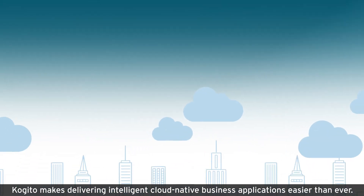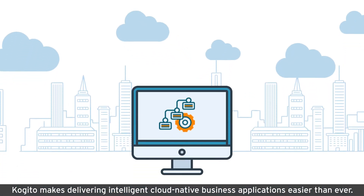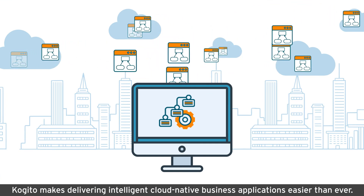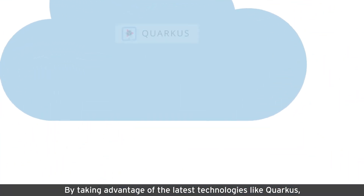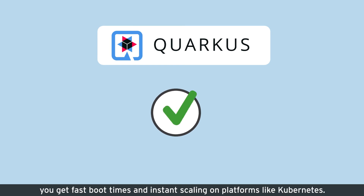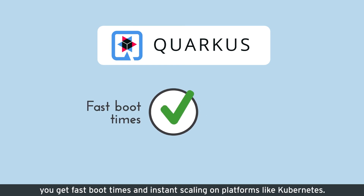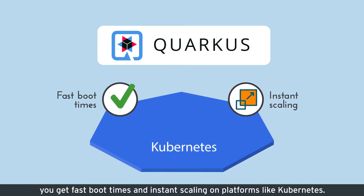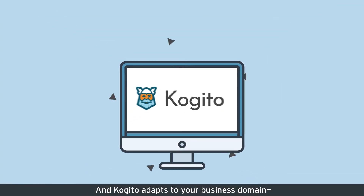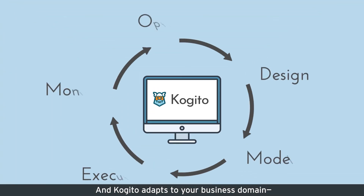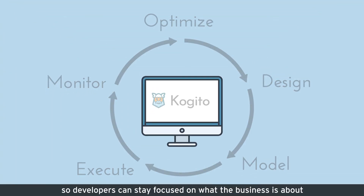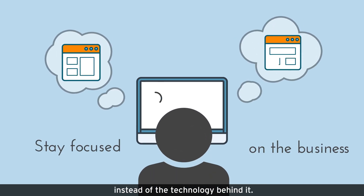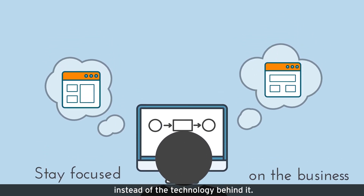Cogito makes delivering intelligent cloud-native business applications easier than ever. By taking advantage of the latest technologies like Quarkus, you get fast boot times and instant scaling on platforms like Kubernetes. And Cogito adapts to your business domain, not the other way around, so developers can stay focused on what the business is about instead of the technology behind it.